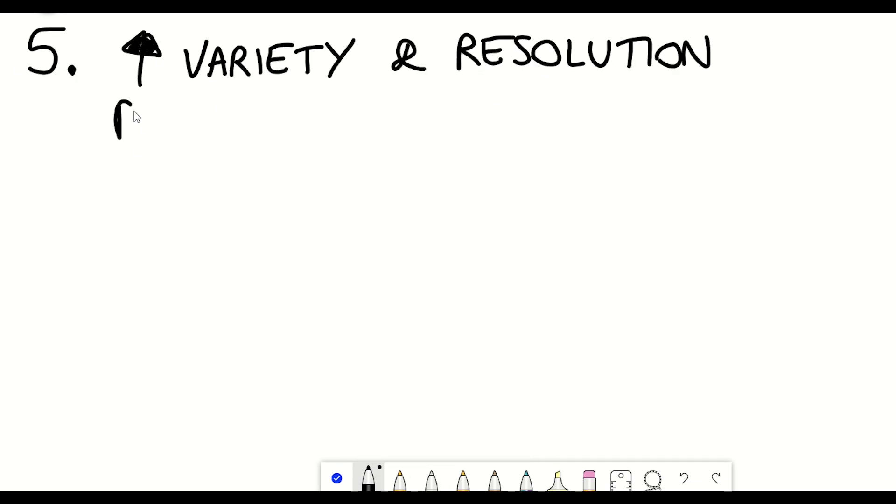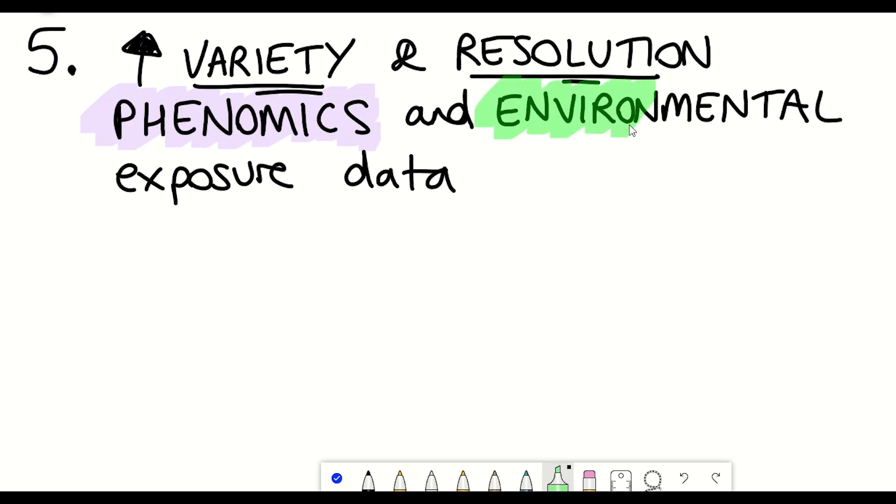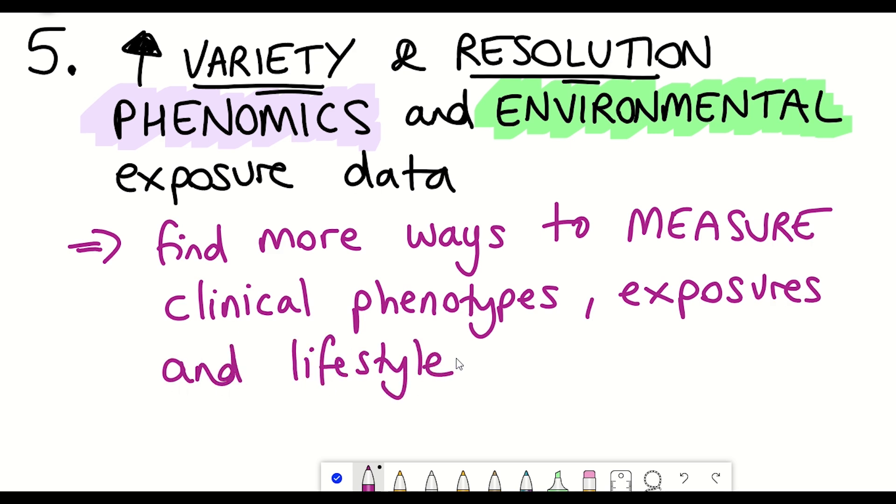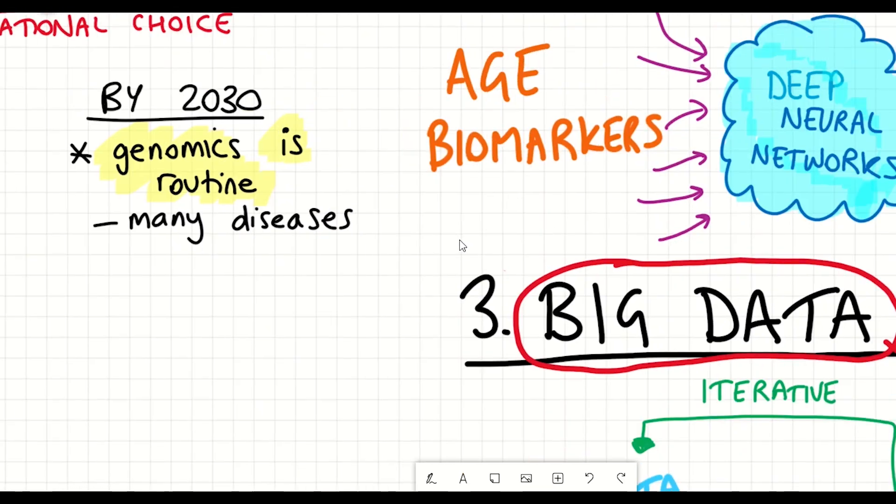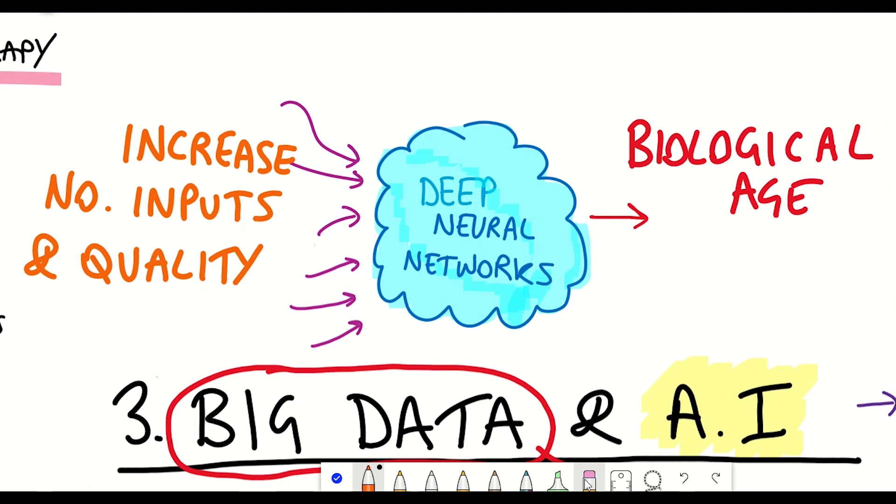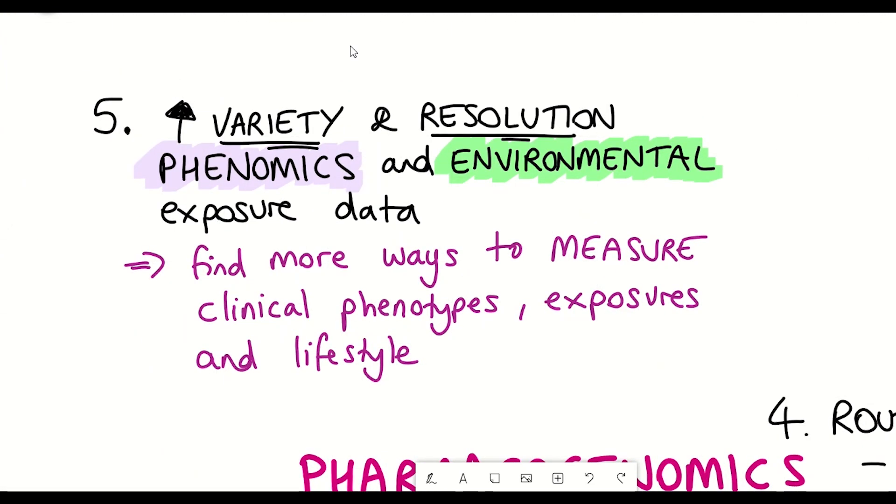And so this leads on to the next opportunity, which is higher variety, higher resolution phenomics and environmental exposure data for both clinical and research use. So effectively, what this next opportunity is referring to is the continued growth of research and clinical uses for different ways to measure clinical phenotypes, exposures, and lifestyle, and basically try to harness the pretty much unlimited biological, physiological, anatomical, and environmental data that could be very valuable for improving the output data.